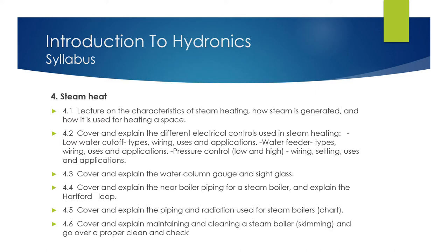4.3 Cover and explain the water column gauge and sight glass. 4.4 Cover and explain the near boiler piping for a steam boiler and explain the Hartford Loop. 4.5 Cover and explain piping and radiation used for steam boilers using a chart. 4.6 Cover and explain maintaining and cleaning a steam boiler - skimming, and go over a proper clean and check.